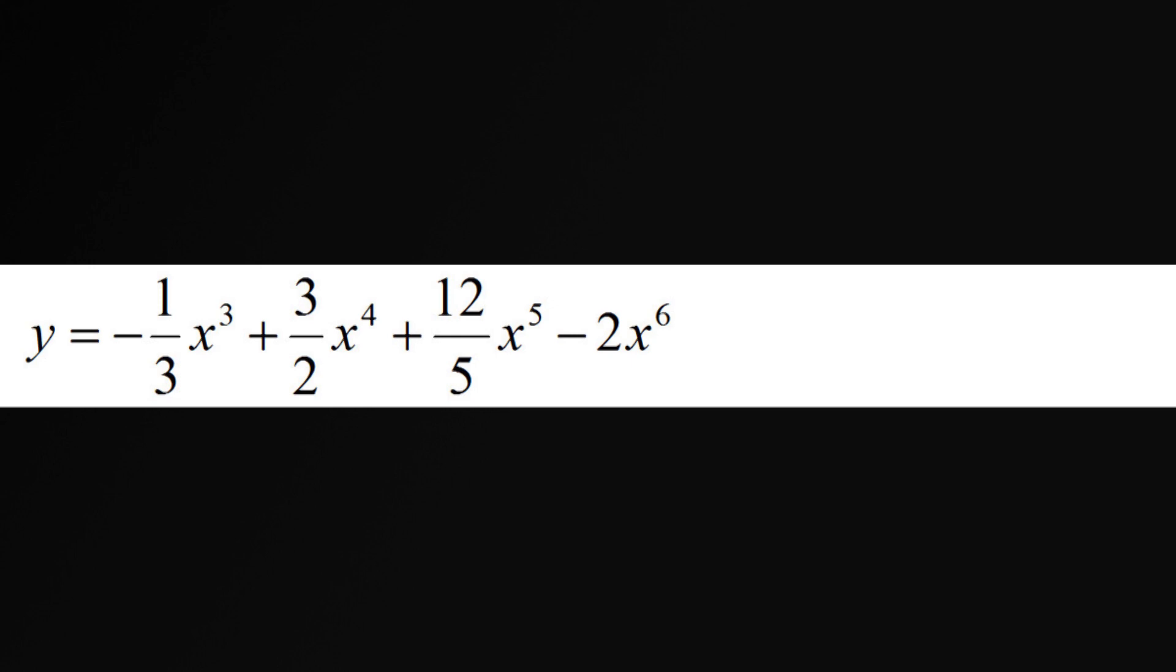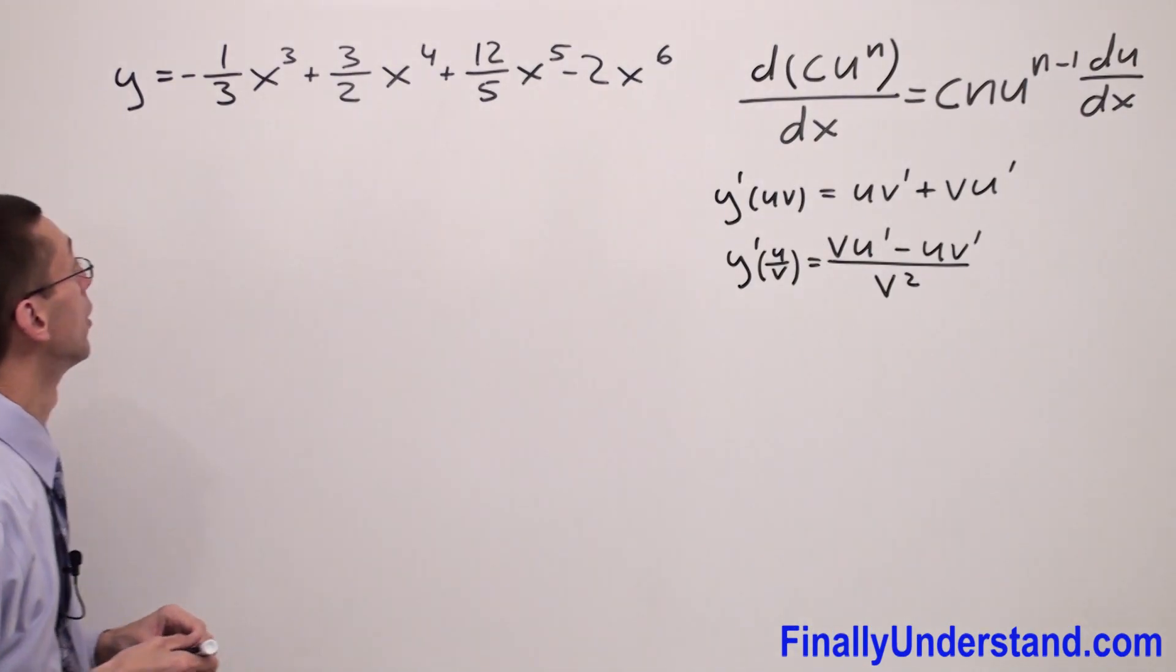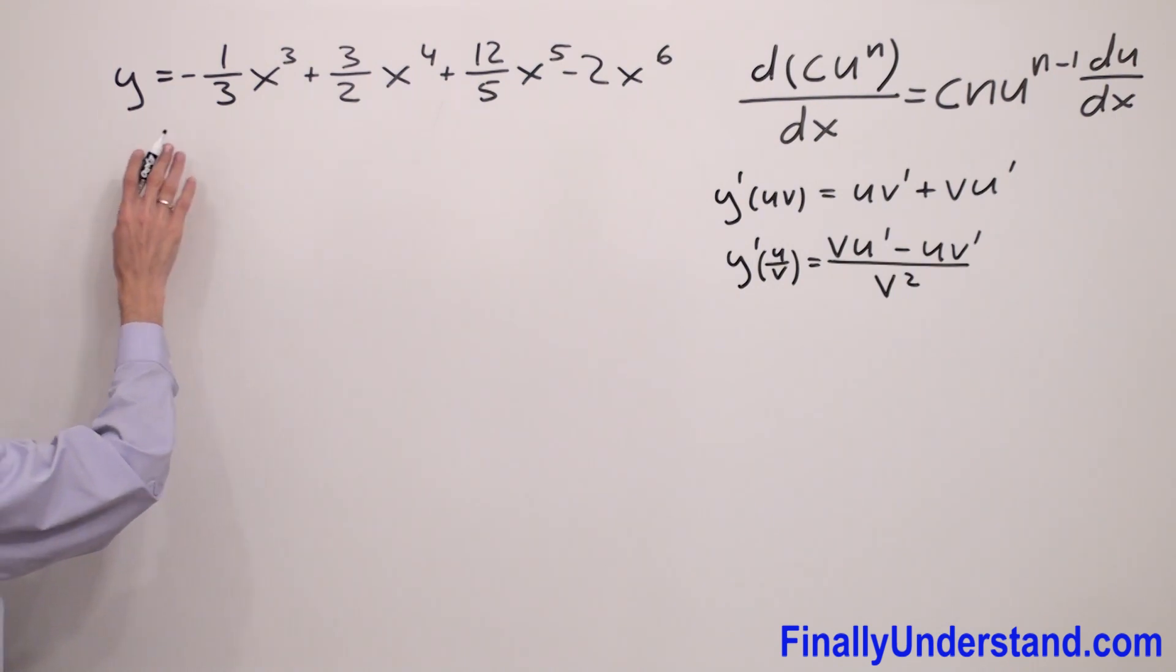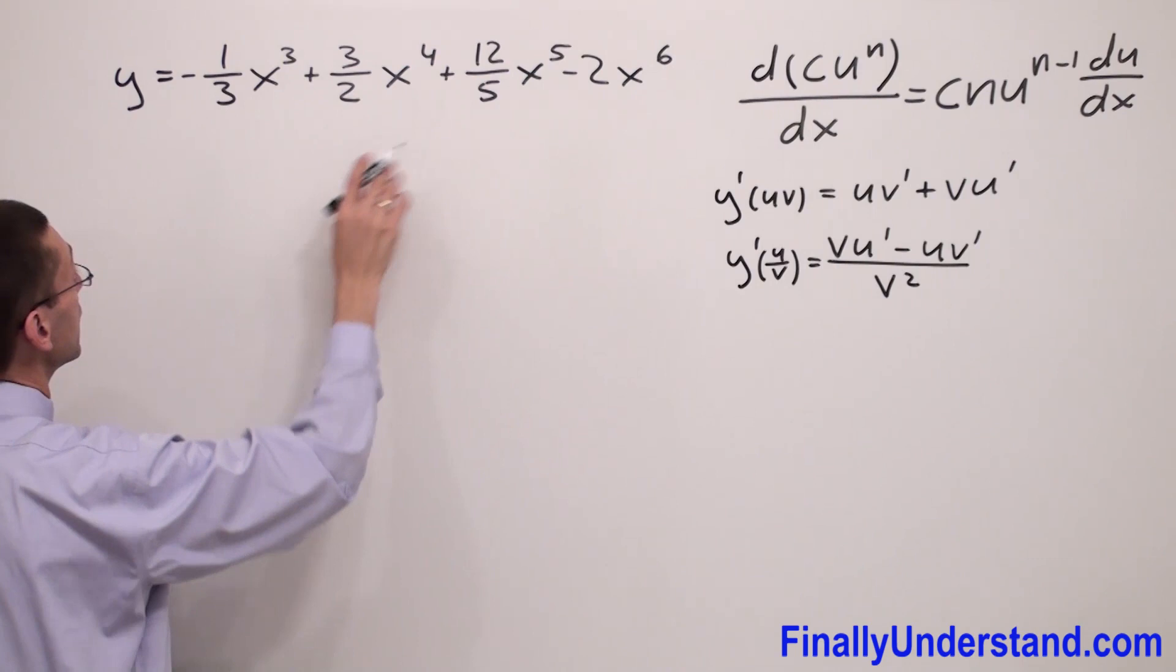Let's take a look at this example. We're supposed to find the derivative of this function. We need to find the derivative of each term and keep the same signs.